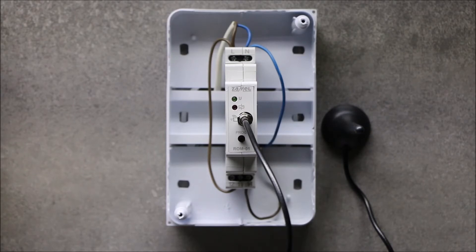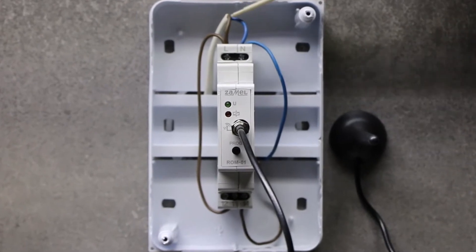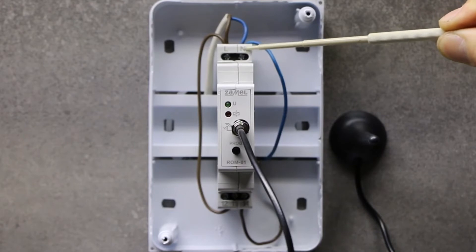Wires with a maximum cross-section of 2.5 mm squared can be connected to the terminals. Power supply wires L and N should be connected to terminals L and N of the receiver.